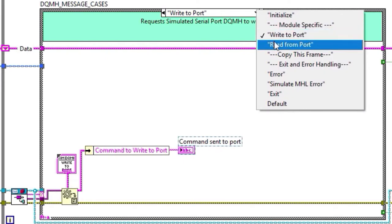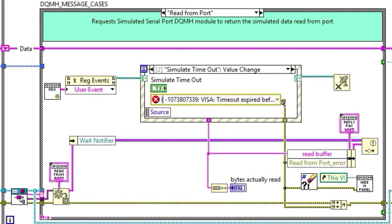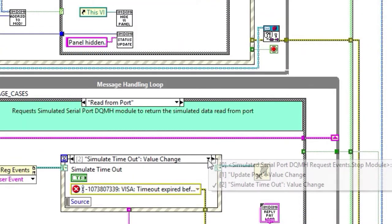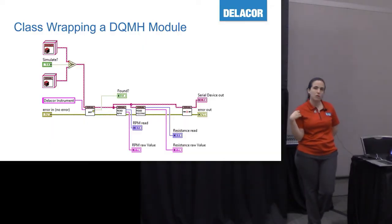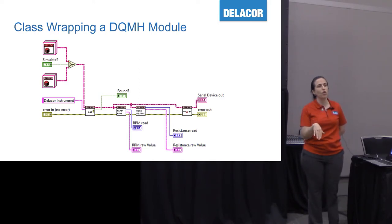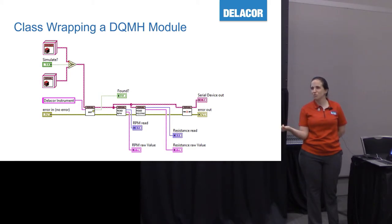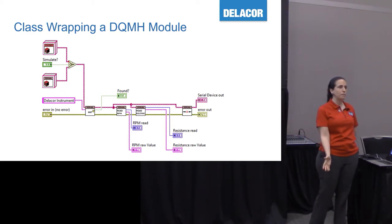Inside the simulated DQMH, whenever we write something we display it on the front panel. When we do read from port, we have three states: update port puts it directly on the output; simulate timeout uses the error ring to generate the actual VISA timeout error — so in simulation you can get the same error as with physical hardware. Advanced developers may have techniques with less code, but this means I can tell an intern: I need a simulated device — create a new DQMH module with a front panel and these requests. Then I'll wrap it in a class. So when customers say 'we don't have time to implement simulation,' now you have a quick way of having a simulated panel.